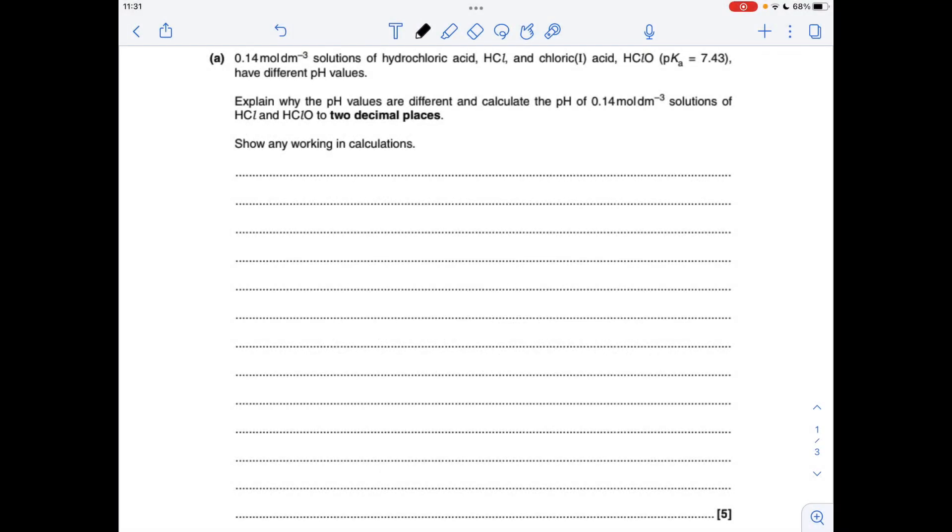Okay, so we've got the same concentrations of hydrochloric acid and chloric 1 acid, and we've got to explain why they've got different pH values, and we've got to calculate the different pH values.